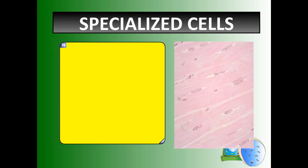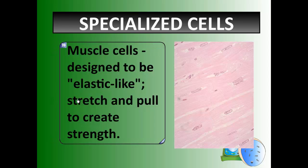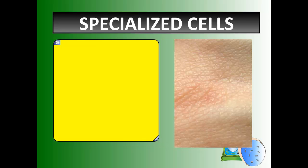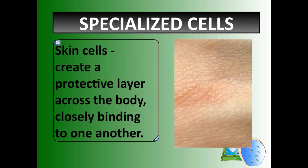This type of cell is a muscle cell, and you can see that it looks very thin or stretchy. That's because it's designed to be elastic-like, to stretch and pull to create your strength. This is your skin cell, and it creates a very protective layer. Notice how it's very tightly woven across the body and the cells bind very closely to one another so things don't get through as easily.